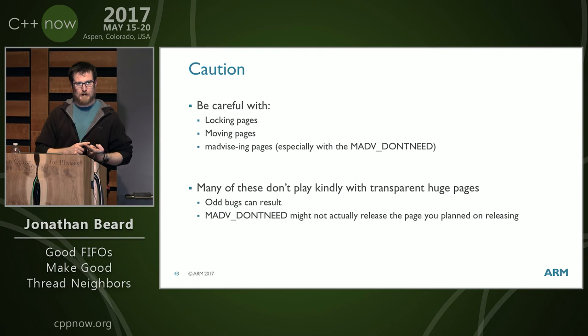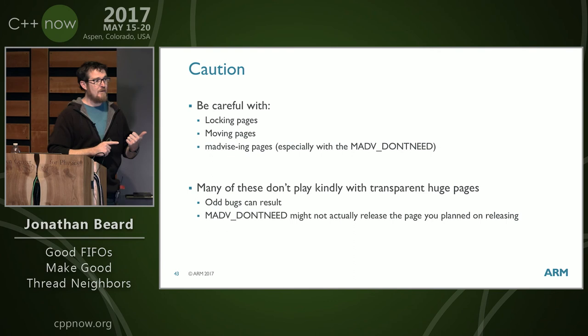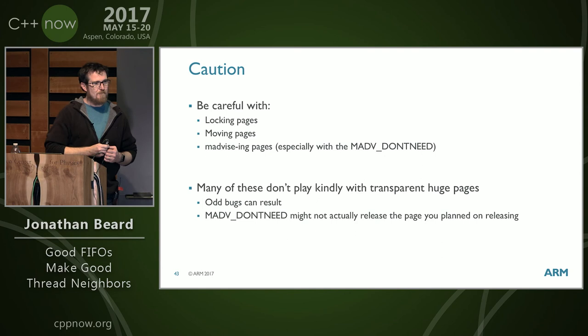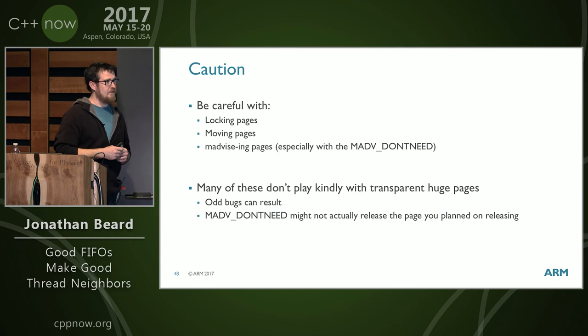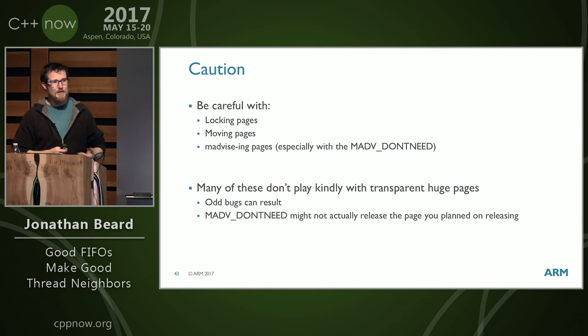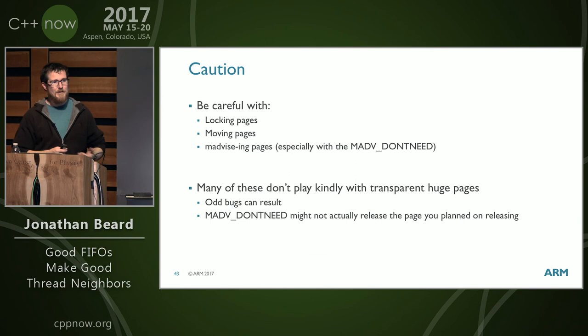A few cautionary notes: madvise DONTNEED combined with transparent huge pages causes strange effects — you can't necessarily deallocate one 4K page out of a now-coalesced transparent huge page. RocksDB was one example of a bug there. Also, if you have latency-critical code, don't NUMA-move; just leave it. And if you're locking pages, please unlock them as soon as you don't need them. Free up the physical memory and be nice to the OS and other applications.